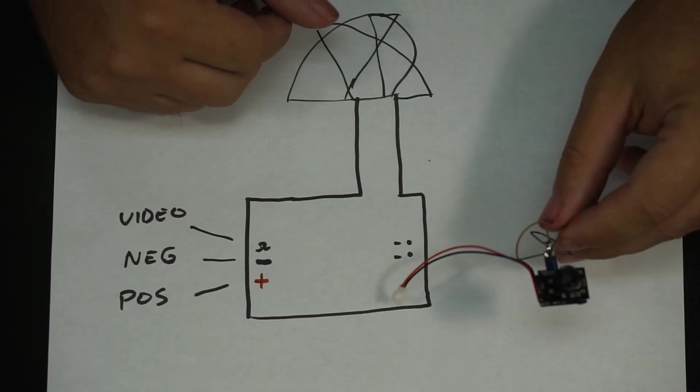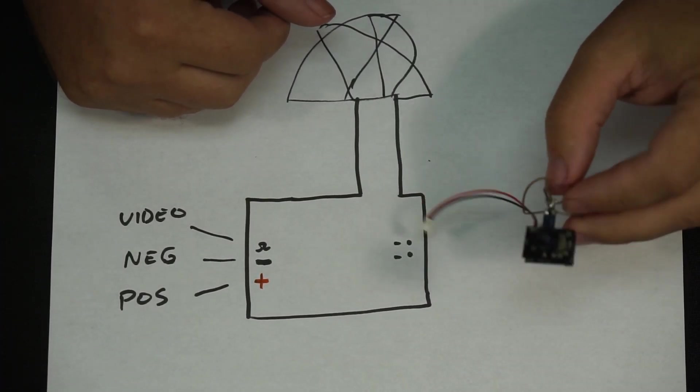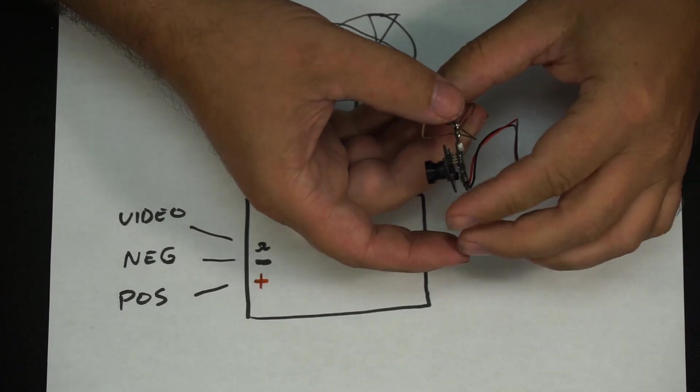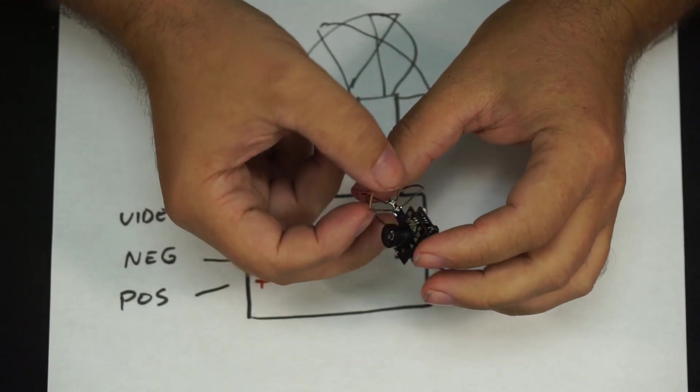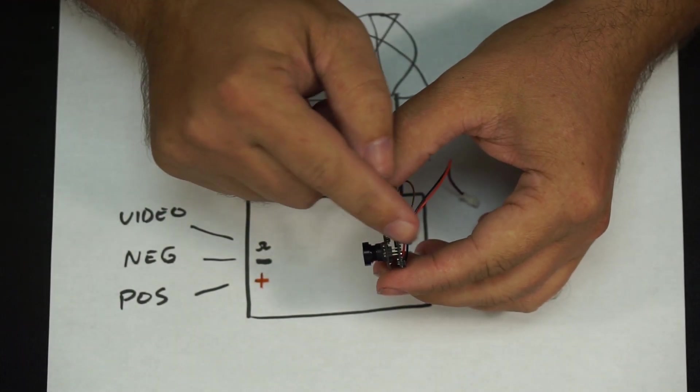All right let's get started with this mullet mod. First you're going to need a Quantum Elite micro cam VTX and let's first take a look at this so you understand it. Once you remove the cover of the case, which most people do to save the weight anyway, there's always two boards installed.